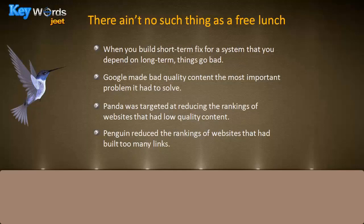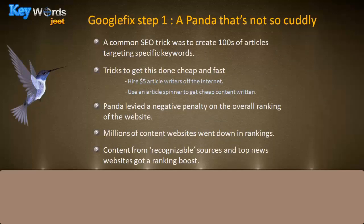The second update released a little while later was called Penguin. Penguin reduced the rankings of websites that had built too many links in unethical ways. Link building, which had been an important part of improving PageRank and getting ranked, was now not such a good idea if you were building bad-quality links. Making a website with hundreds or thousands of articles targeting specific keywords with bad-quality 500-word content was also no longer a good idea.